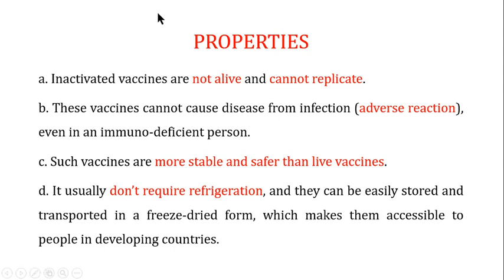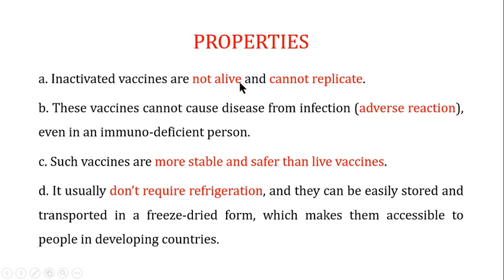The properties of the killed vaccines are that these vaccines are not alive and they cannot replicate. This is one of the important properties: since they cannot replicate, they also cannot revert back to their original form to cause disease, which was one of the major problems with live vaccines.